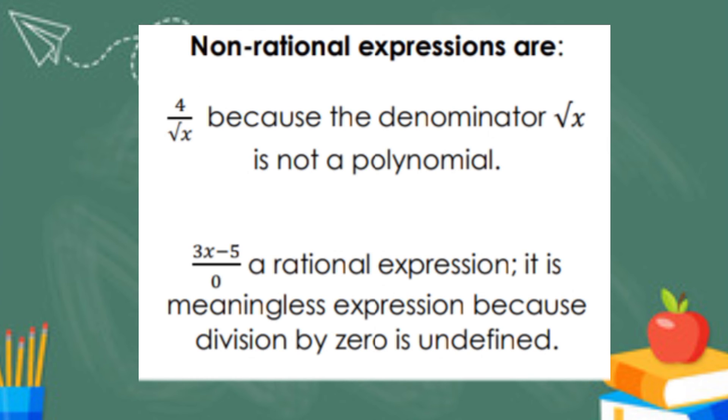Next example, 3x minus 5 all over 0. This is not a rational expression because the denominator is 0.